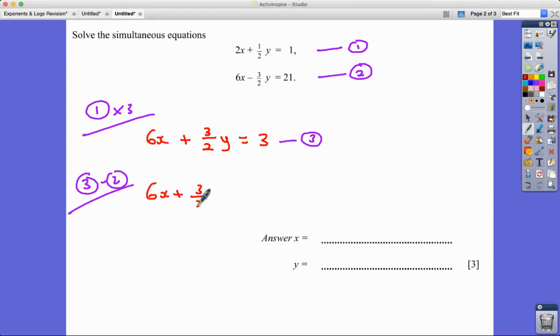6X plus three over 2Y equals three. I've also got 6X minus three over 2Y which equals 21. Actually, come to think of it, it might be more sensible at this point to add them because if I take away,